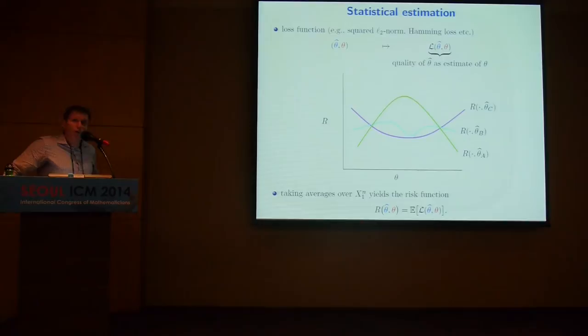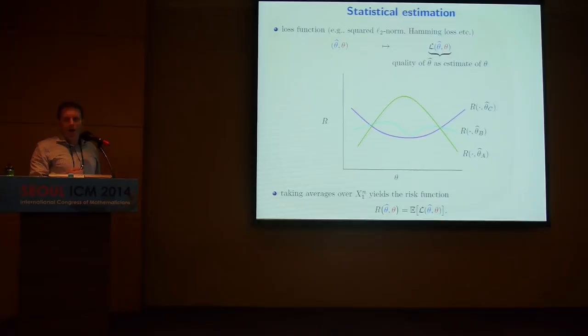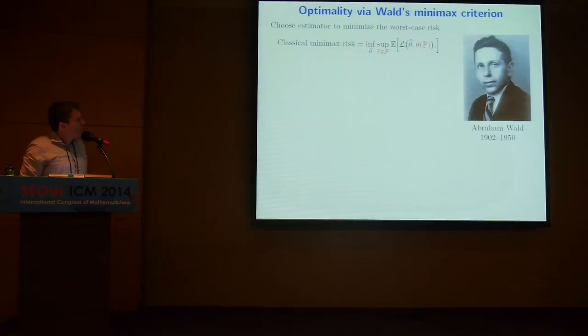If you want to say something unambiguous, you'd like to scalarize that — get one number for each estimator. There are different ways of doing that. If you were a Bayesian, you might put a prior on theta and integrate the risk function against that prior. In minimax theory, you do something more adversarial — you imagine that nature is evil, and it searches over the parameter space to take the worst case of your estimator. That defines the classical minimax problem known as Wald's minimax criterion, which has obvious game-theoretic interpretations.